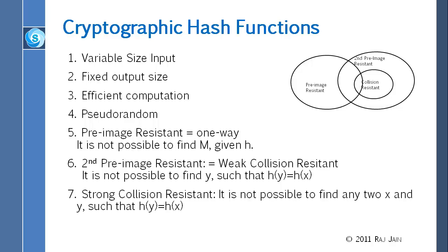The second cryptographic property is that given M, not only can you not find M from the hash, but you also cannot find another Y which hashes to the same value. That is called second pre-image resistant, which means you cannot create collisions. The third property is strong collision resistance: it is not possible to find any two X and Y such that they collide — not given a specific hash, just any two inputs at all.